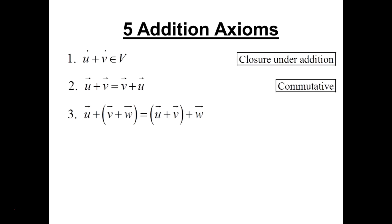Thirdly, we need to be able to take three vectors and group them in a way that it shouldn't matter which two we add first. So if we have U plus V plus W where we add V and W first, it should be the same as if we added the first two U and V first and then added W. And that's associativity.